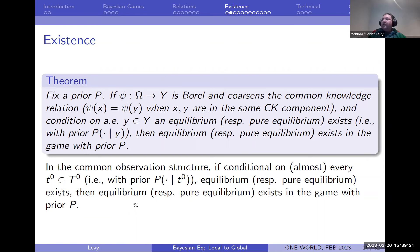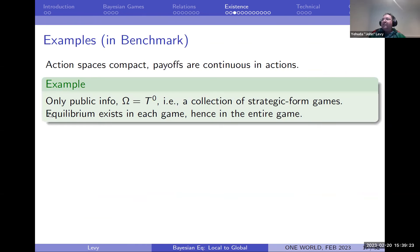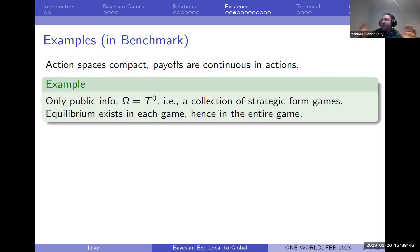Let's see some examples. If there is only public information, then basically I'm looking at a collection of strategic-form games — something is announced and then everyone knows everything, no private information. Equilibrium existing in each game is enough to piece them together for the entire game. As you can guess, you didn't need me for that — that's a standard technique used for ages.